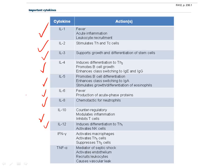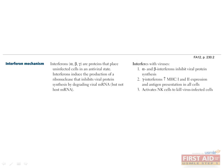IL-12 induces the differentiation of T cells into Th1 cells and activates NK cells. Interferon gamma is a member of a class of cytokines known as interferons, which also includes interferon beta and interferon alpha. These proteins place uninfected cells in an antiviral state and inhibit viral protein synthesis through the degradation of viral mRNA. The alpha and beta interferons inhibit viral protein synthesis, while interferon gamma activates macrophages, Th1 cells, and NK cells. Interferon gamma also has anti-tumor properties.